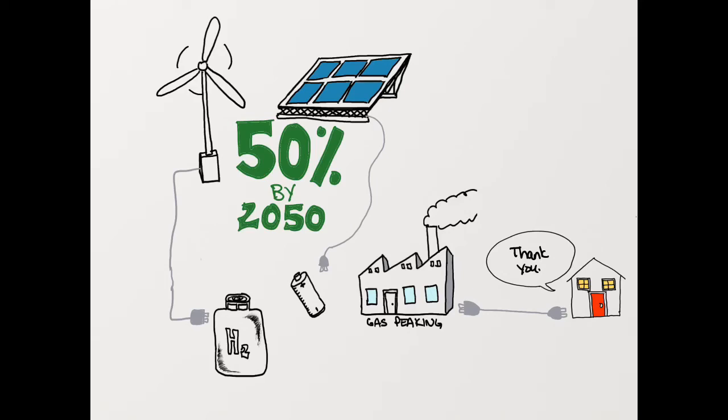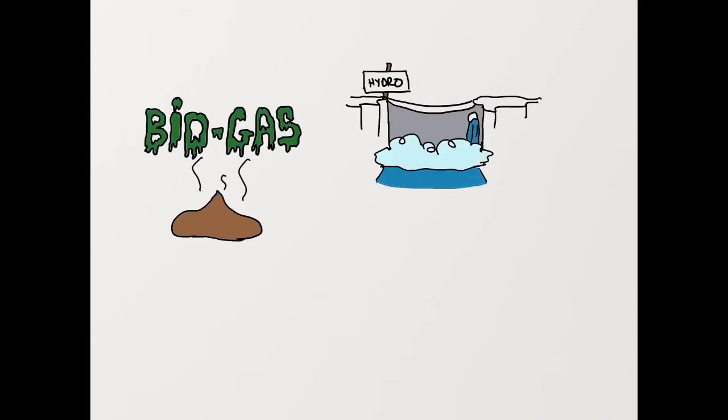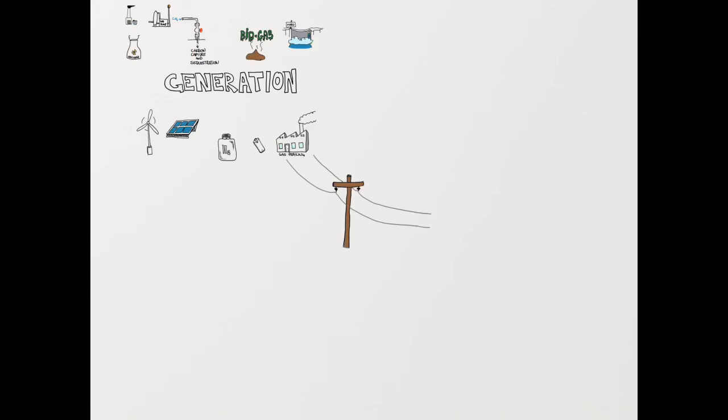With so much additional power required, it won't just be the new technologies that are needed. Traditional sources will be challenged to decarbonize, continuing to provide a portion of generation while using carbon capture and sequestration to reduce emissions, and other sources are continuing to be developed. The energy transition for generation means to change the mix of power sources and to grow the amount of energy being produced.